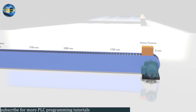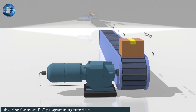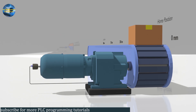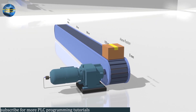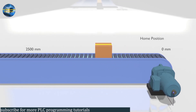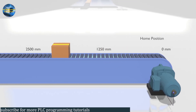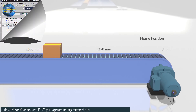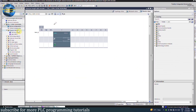We have a conveyor belt which is moving with a motor and a gearbox. We have coupled an incremental encoder with 360 pulses per revolution with this motor. We are using an S7-1200 PLC for this project. If you want to see how we can connect an encoder with the PLC, the link is in the description box. First of all, we will add a PLC in the project and open the device configuration.